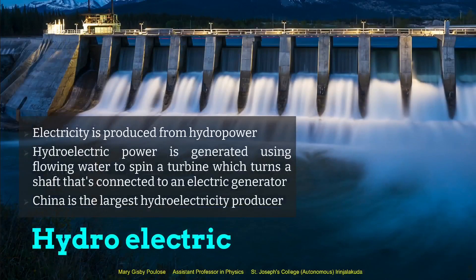The most popular type of conventional energy source in our country, and in our state particularly, is the hydroelectric energy generated by dams. Electricity is produced from hydro power or water power — it is generated by flowing water over a turbine and the turbine rotates. The rotation of the turbine is then connected to an electrical generator which produces electricity. Currently China is the largest hydroelectricity producer.